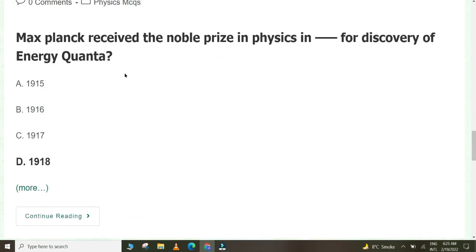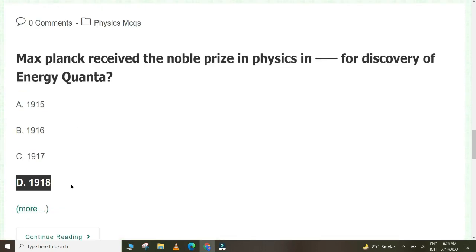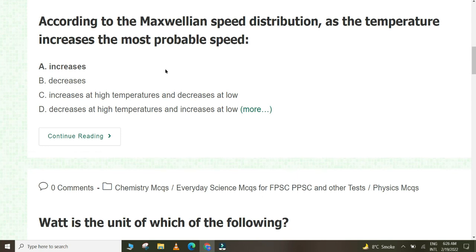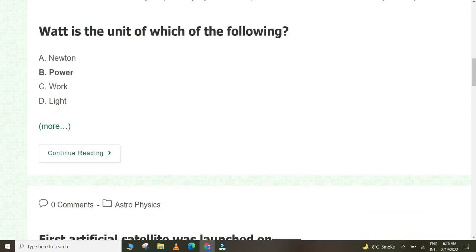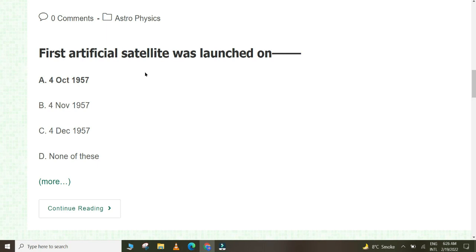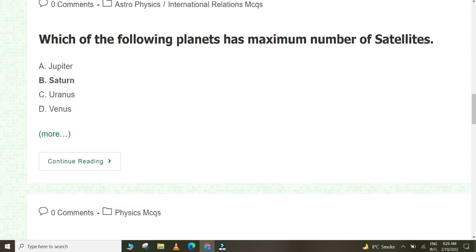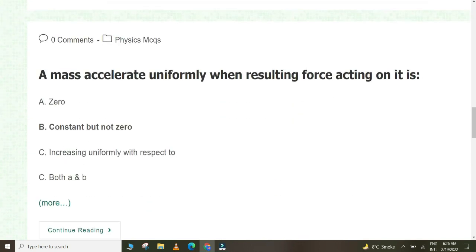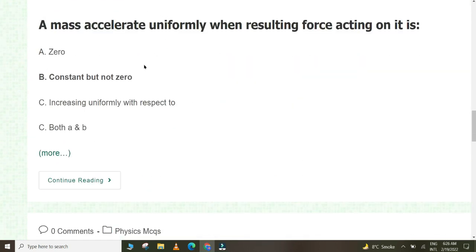The branch of philosophy that focuses on the nature of reality is metaphysics. The operating principle of a hydraulic press is Pascal's principle. Max Planck received the Nobel Prize in physics in 1918 for the discovery of energy quanta. According to the Maxwellian speed distribution, as the temperature increases, the most probable speed increases. What is the unit of power? Watt. First artificial satellite was launched on 4 October 1957. Which of the following planets has maximum number of satellites? Saturn.